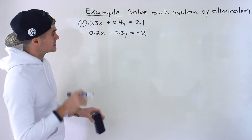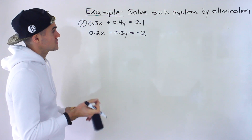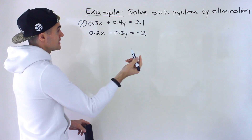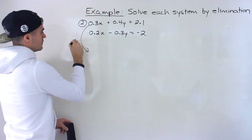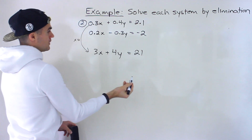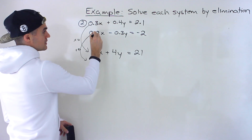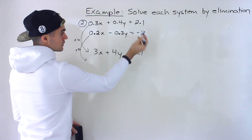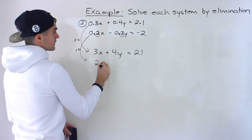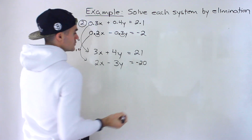Moving on to number 2. We have 0.3x plus 0.4y equals 2.1, and 0.2x minus 0.3y equals negative 2. Same approach: multiply everything by 10. The first equation becomes 3x plus 4y equals 21. There's just one digit to the right of each decimal, so multiplying by 10 works. The second equation becomes 2x minus 3y equals negative 20.